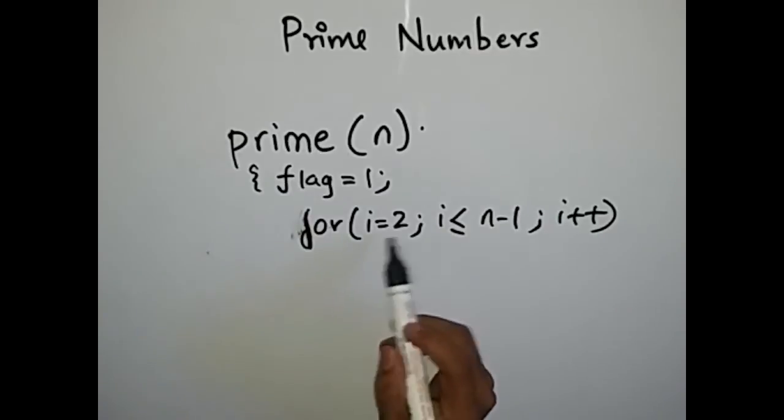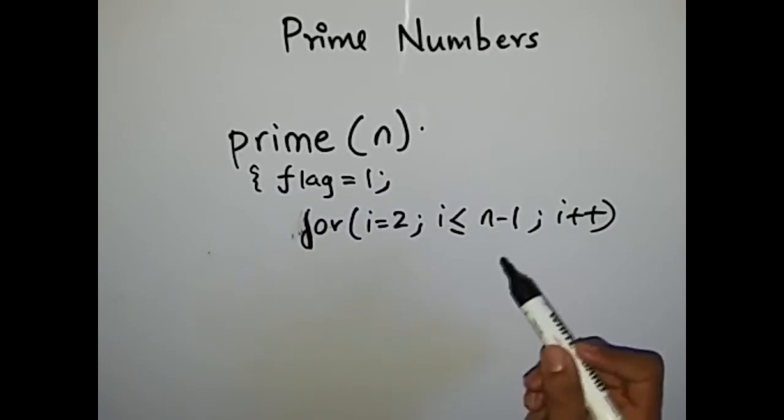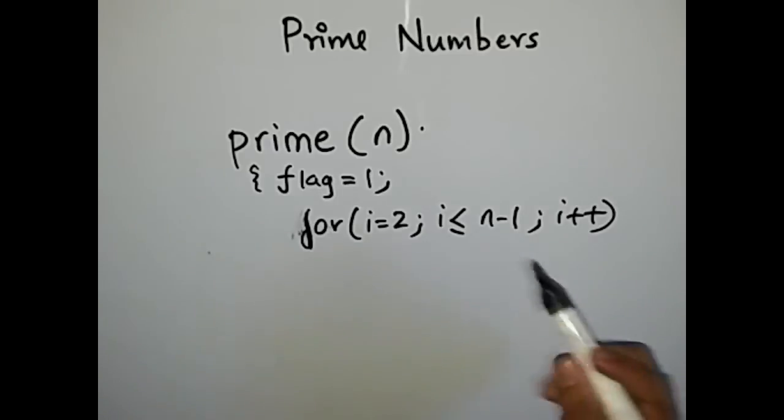Now I will explain you why we took 2 here and why we are going only up to n minus 1, and how can we make the technique more efficient. You guys might be having a problem like time limit exceeded in your submission. So I will teach you how to make this logic more efficient, but just stick to it for a second.